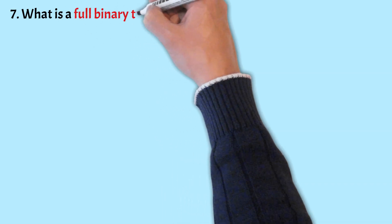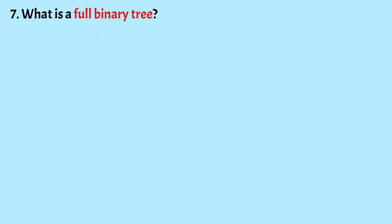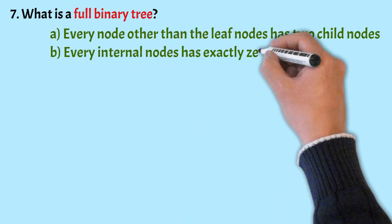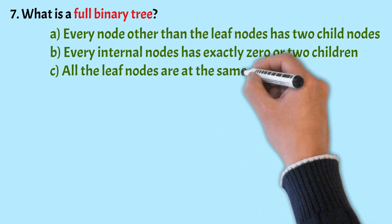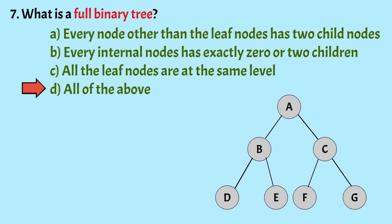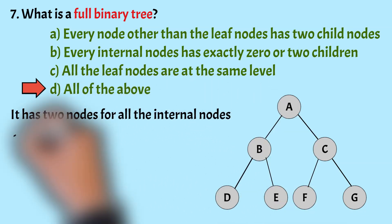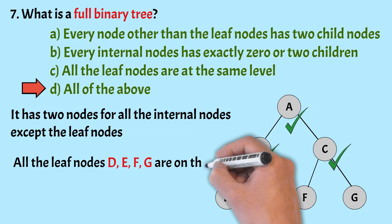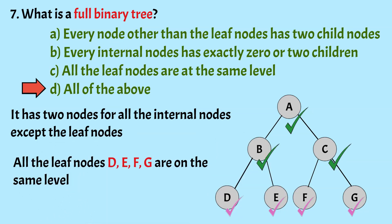Coming to the next question. What is a full binary tree? The options are: every node other than the leaf nodes has 2 child nodes; every internal node has exactly 0 or 2 children; all the leaf nodes are at the same level; and all of the above. The correct option is Option D, all of the above. A full binary tree is a special type of binary tree where every internal node has 0 or 2 children, also known as a proper binary tree. In this example, all internal nodes have 2 children, and all leaf nodes D, E, F, G are on the same level, confirming it is a full binary tree.